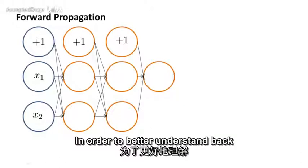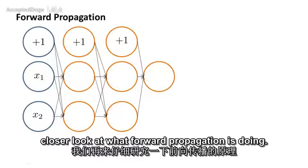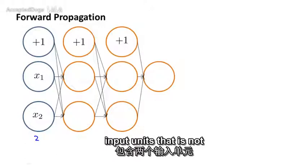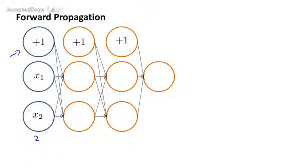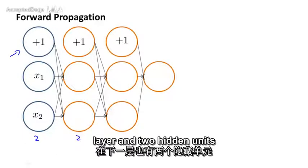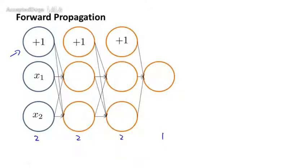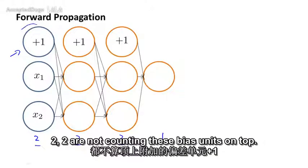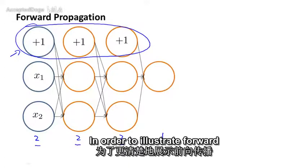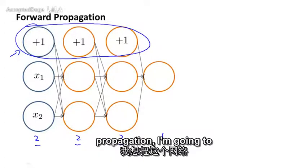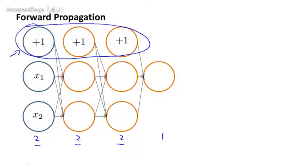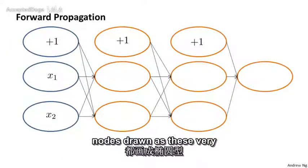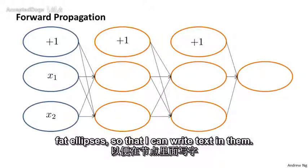In order to better understand backpropagation, let's take another closer look at what forward propagation is doing. Here's a neural network with two input units, not counting the bias units on top. In order to illustrate forward propagation, I'm going to draw this network a little bit differently, with the nodes drawn as very fat ellipses so that I can write text in them.